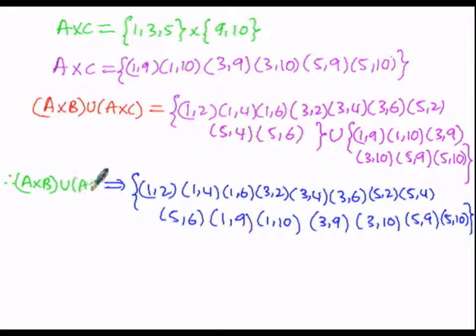So A cross B union A cross C has 15 ordered pairs as its elements. Let us write this as the second equation.